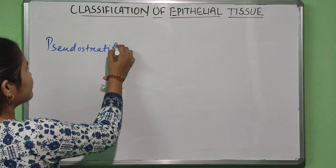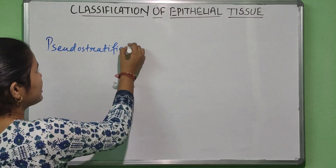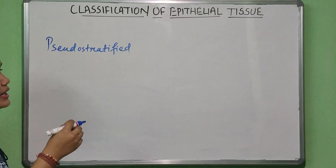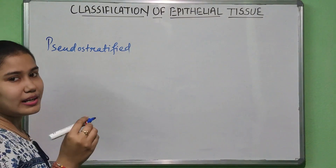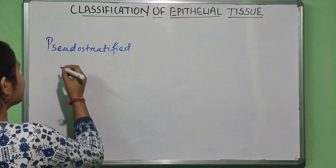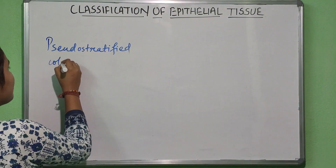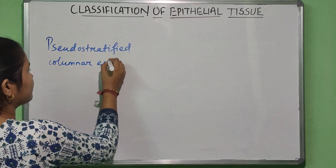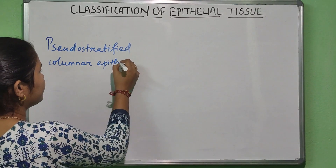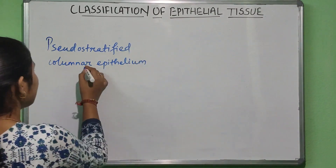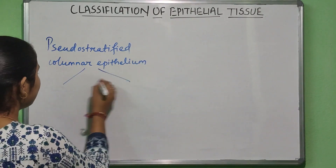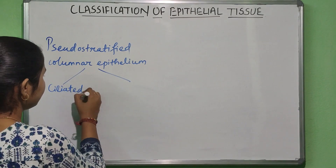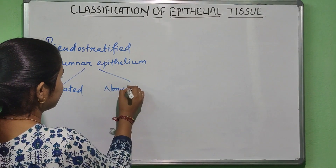Pseudo-stratified epithelium is always columnar in structure — that's why it's called pseudo-stratified columnar epithelium. It can be ciliated or non-ciliated.